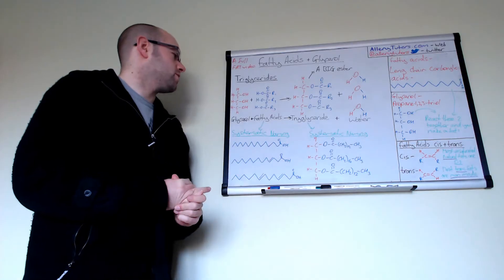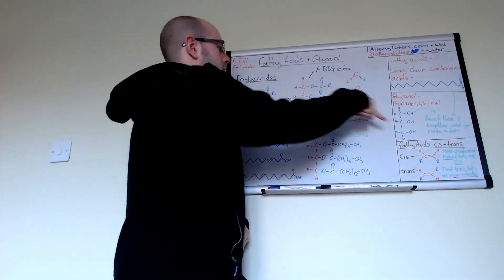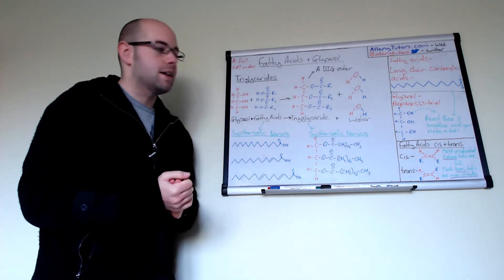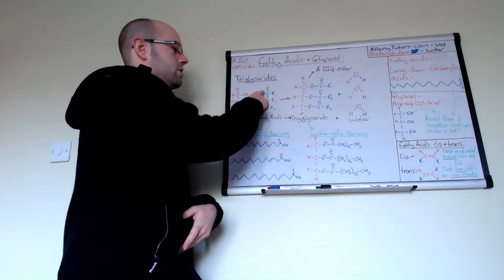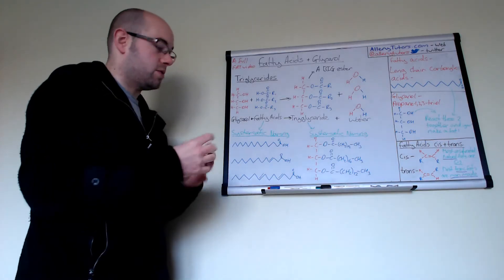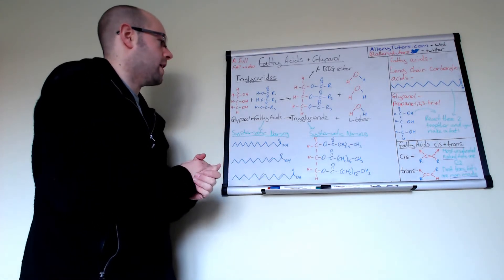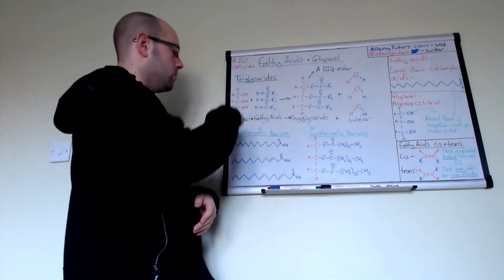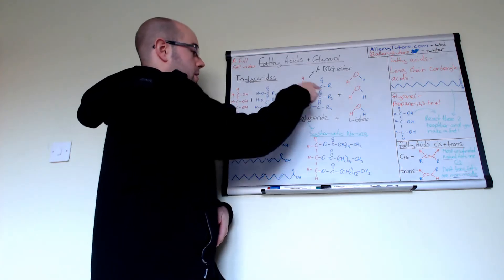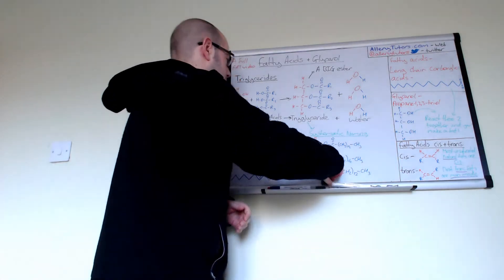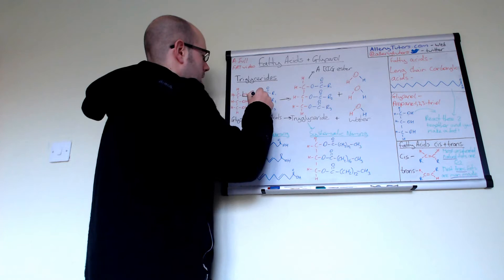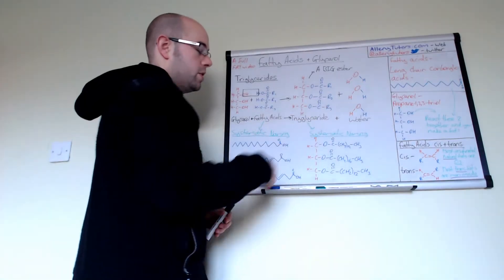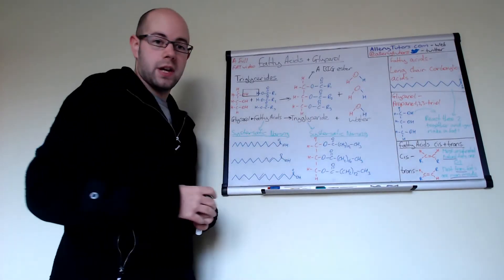Now let's look at some reactions. If we take glycerol and fatty acids, we can make a fat, or we call this a triglyceride. This is basically just an ester, so it's an esterification reaction: alcohol plus carboxylic acid forms ester plus water. You need to be able to draw the molecule and suggest which parts have come from where. The red parts have come from your glycerol and the blue parts have come from your fatty acids. The OH from your glycerol and the H from your carboxylic acid join to make water, and because we have three of them, we form three molecules of water, making a very large ester called a triglyceride.